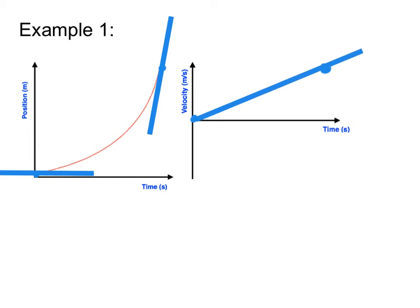And there we have it — a velocity versus time graph for this position versus time graph. We can tell a few things about this object: since it's in the positive region, it's moving forward. And since its velocity is increasing, it's speeding up. So we have that it's speeding up while moving in the forward direction.